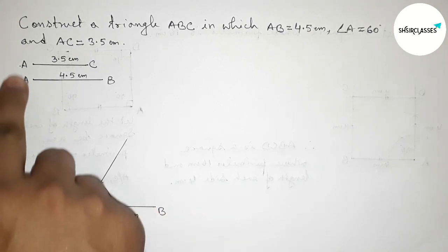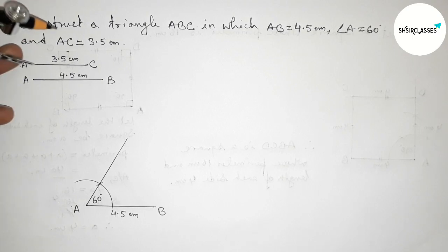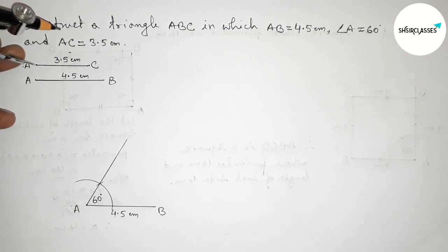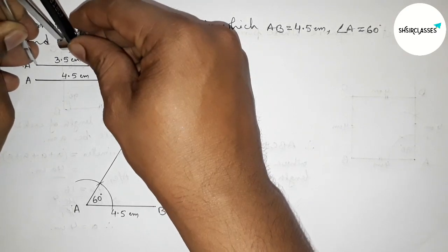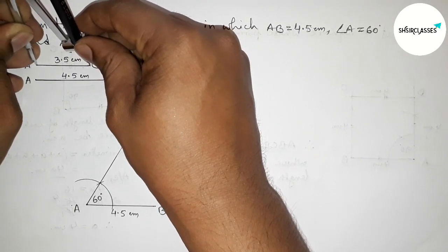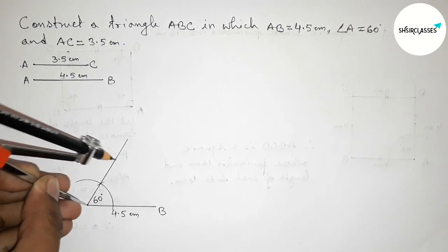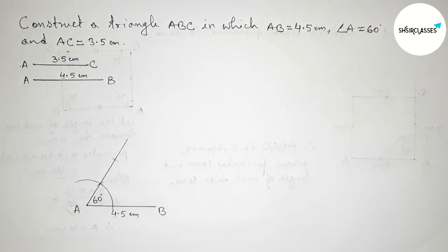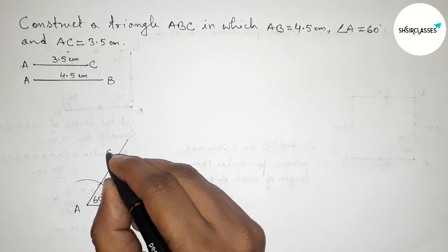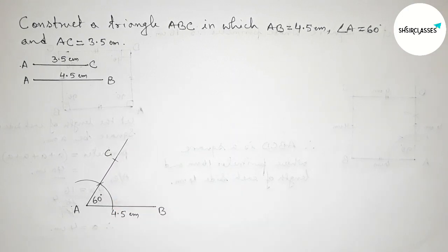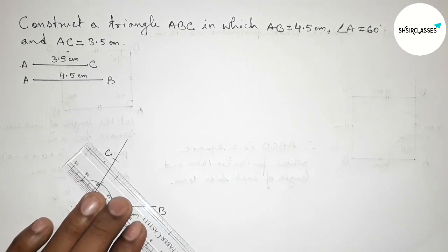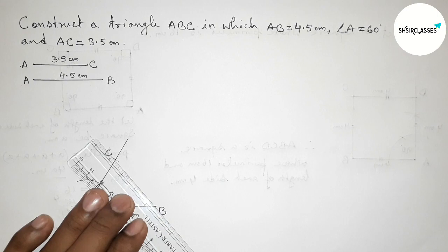Now taking the length AC equals 3.5 centimeters with the compass. Putting the compass and cutting here. Taking point C here and joining side BC to get triangle ABC.